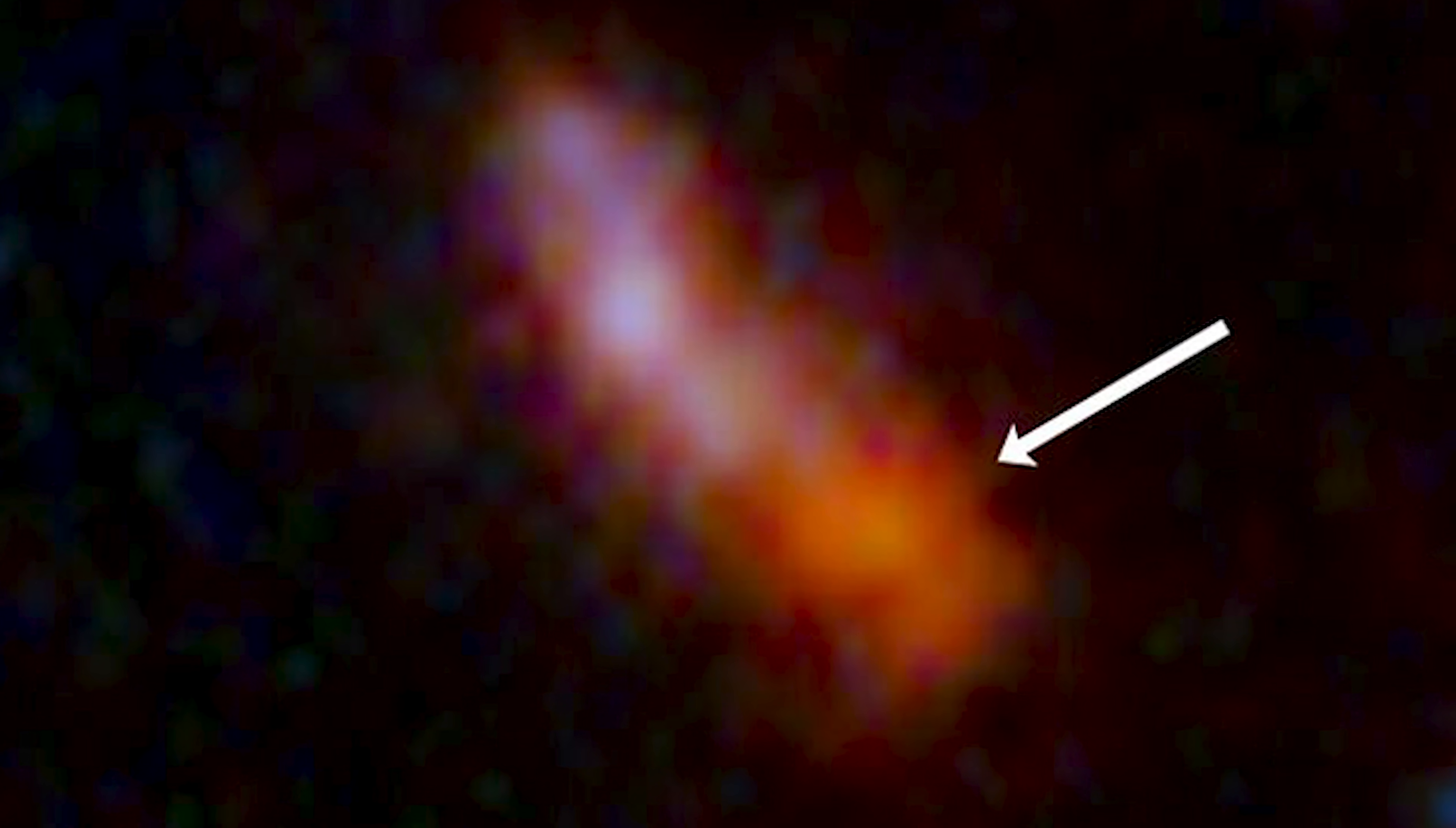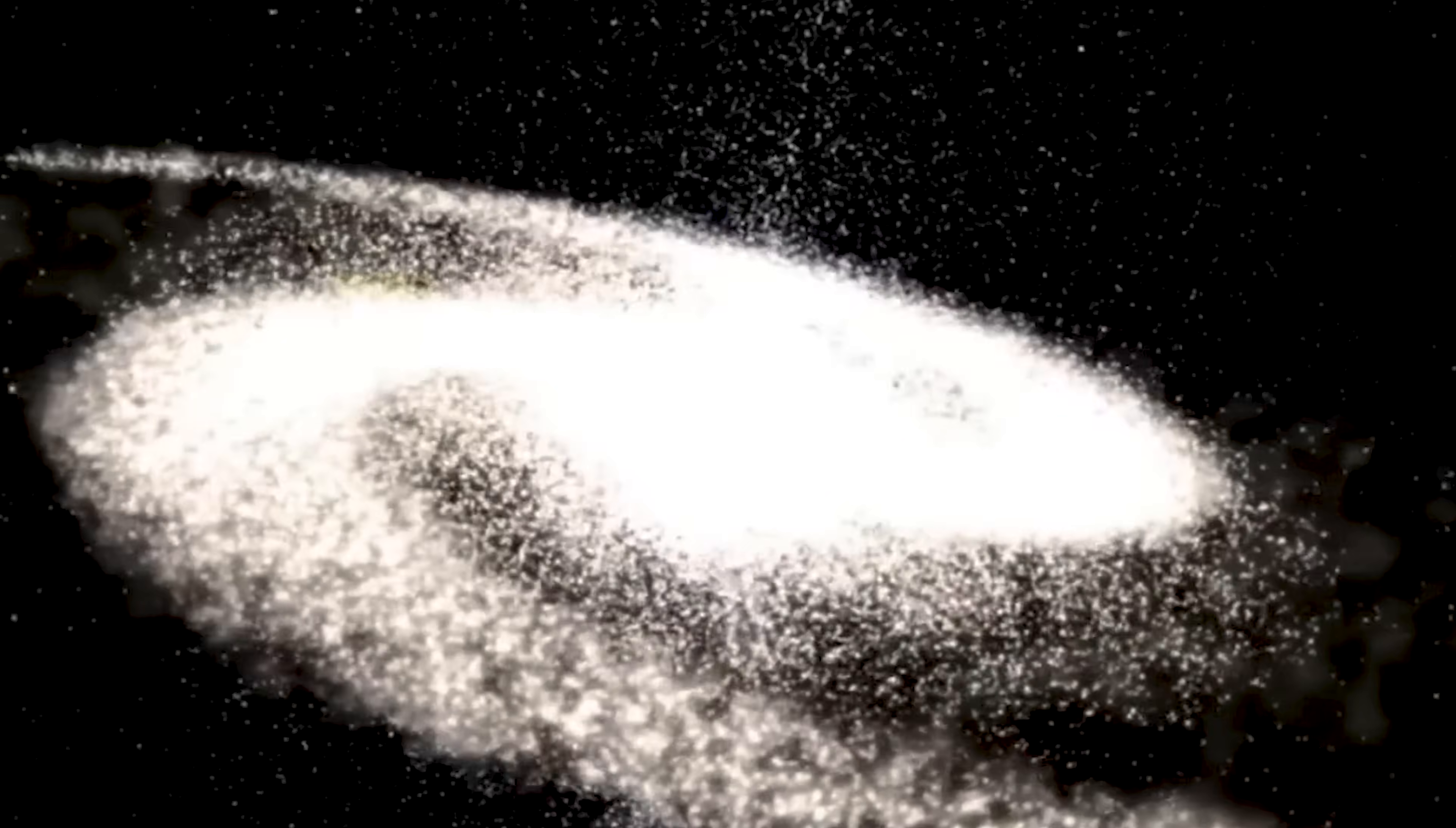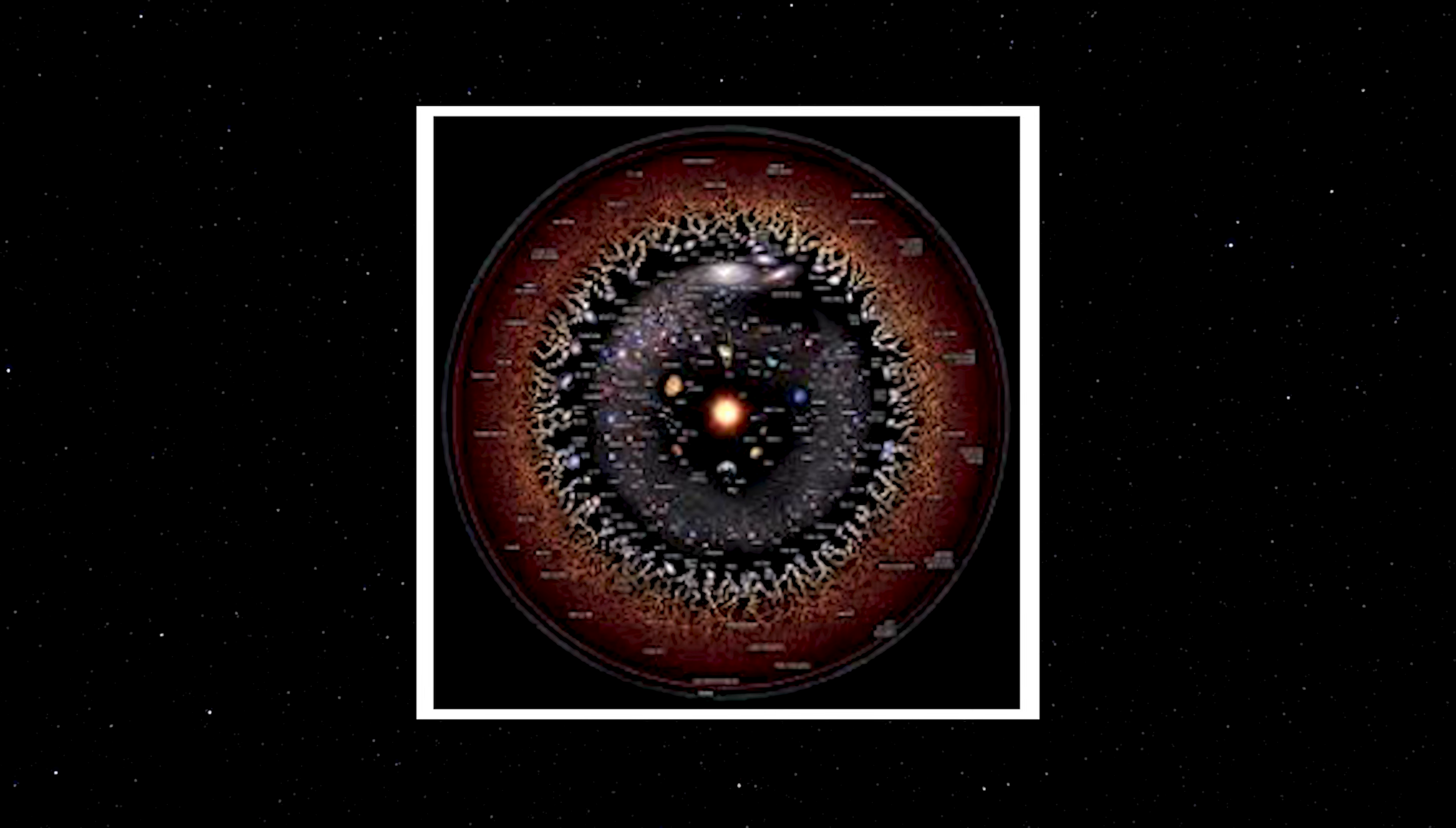The most distant galaxy we've ever detected, known as Jade's GS Z14, comes from a time when the universe was only about 290 million years old. We see it as a cosmic infant. But here's the twist. That galaxy is no longer observable today. It has already slipped beyond our observable horizon. Whatever it has become, whether it merged into a massive cluster or faded away entirely, we will never know. Its future is permanently hidden from us. And this reveals something profound. The observable universe is not the whole universe. It's just our local window.